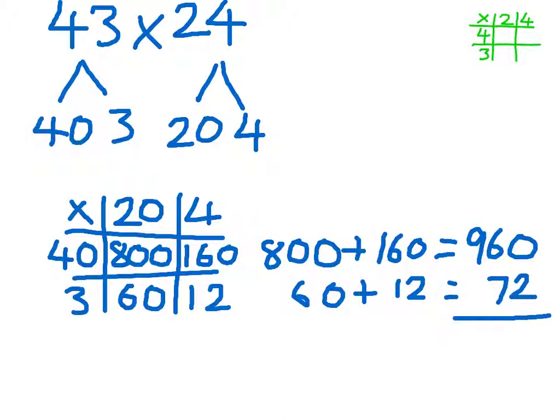I need to add those two together. I can do that by column addition or mentally, however is best for me. In this case, I'm going to partition 72. I'm going to add 40 to 960. That will give me 1000, and I have 32 left to add on. So that gives me 1032.